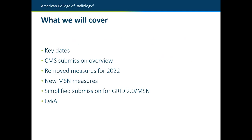So what we're going to cover today: we're going to start off with some key dates for 2021 and 2022, give a quick overview of CMS submission, talk about some removed measures in 2022 as well as some new measures added to the QCDR for 2022. We're going to go over general QCDR measure submission and specifically the simplified submission for the GRID 2.0 measures and the new MSN measures. Then whatever time we have left, we'll do some Q&A.